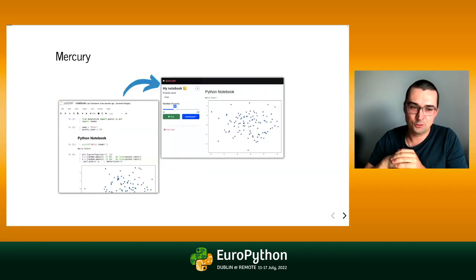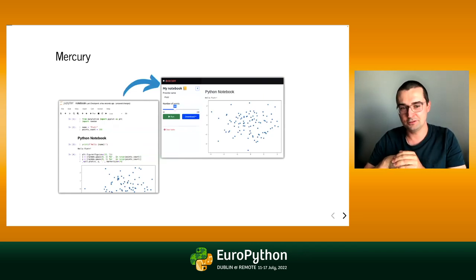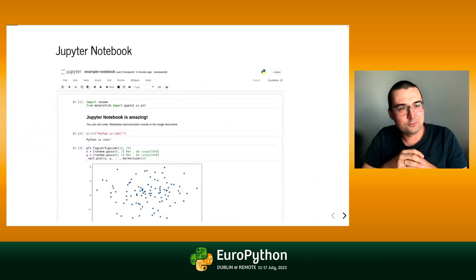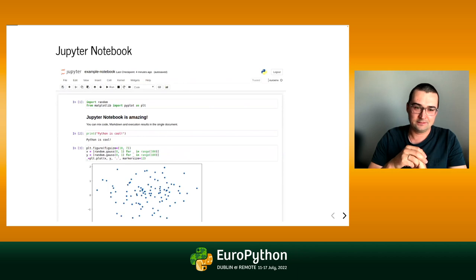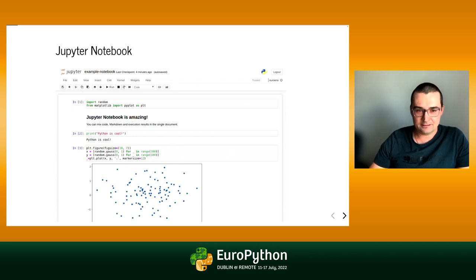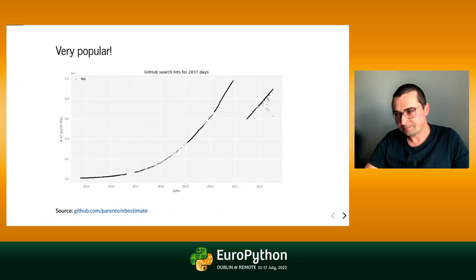I will be talking about the Mercury framework. Mercury is a tool for converting Jupyter notebooks into web applications. We all know the Jupyter notebook as a set of cells and outputs — a cell can be a markdown text or Python code, and it is a quite popular tool.